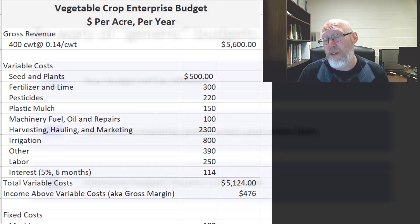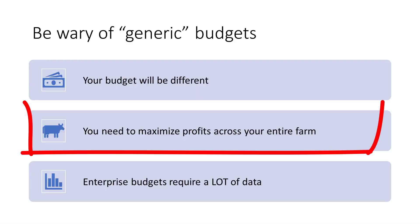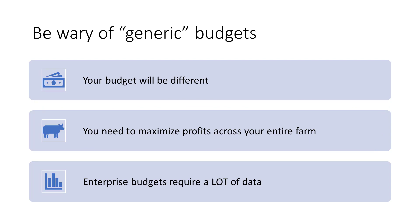That's an example budget — that's not the results you're going to get. That's your starting point. You take their budget and modify it for your farm. Also remember that your goal is not to make money in each enterprise; your goal is to maximize profits across your entire farm. That gets to be really important.